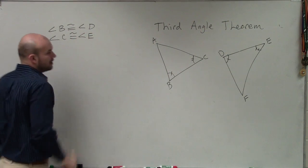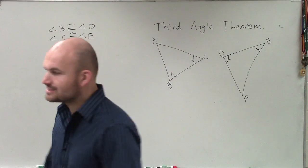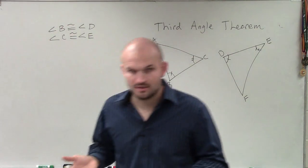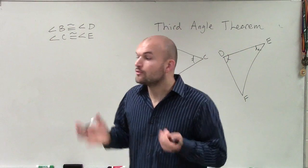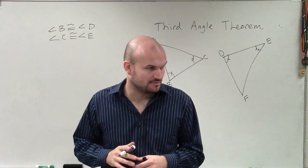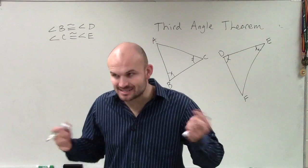So what the third angle theorem tells us is if we have two triangles that have two congruent angles, the third angle has to be equal.